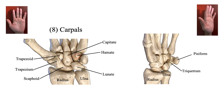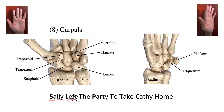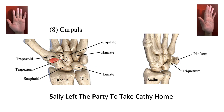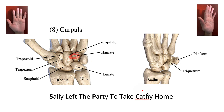There is also a mnemonic I found: 'Sally left the party to take Kathy home.' It works by starting at the scaphoid on the left side, going right, then going back up to the top row left to right. So: scaphoid is Sally, lunate is left, triquetrum is 'the,' pisiform is party, trapezium is 'to,' trapezoid is take, capitate is Kathy, and hamate is home. If that helps you remember this, I would use it.